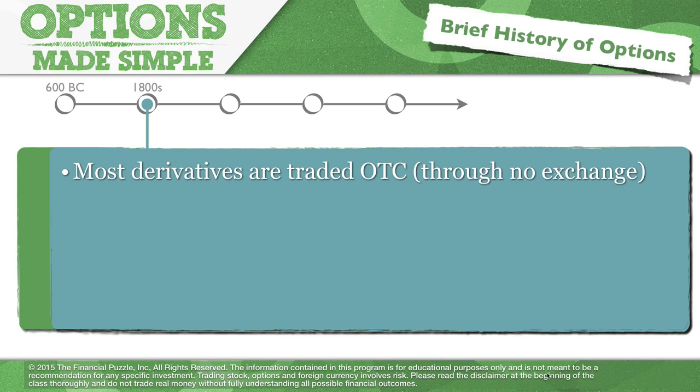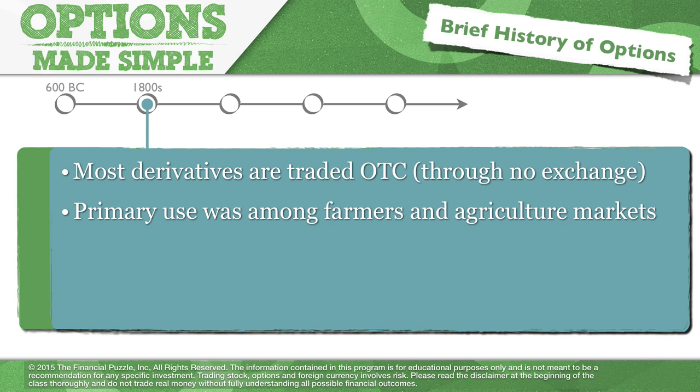Now, as we move forward into more of the modern era, historically, derivatives have been traded what we call OTC or over the counter. They've not gone through a central exchange. And the primary use, whenever you look at derivatives, maybe the last couple hundred years, the primary use was for farmers and for agricultural markets. That's why the futures market is so well developed here in the United States, because the farmers in the ag markets, they needed a way to offset their risk.